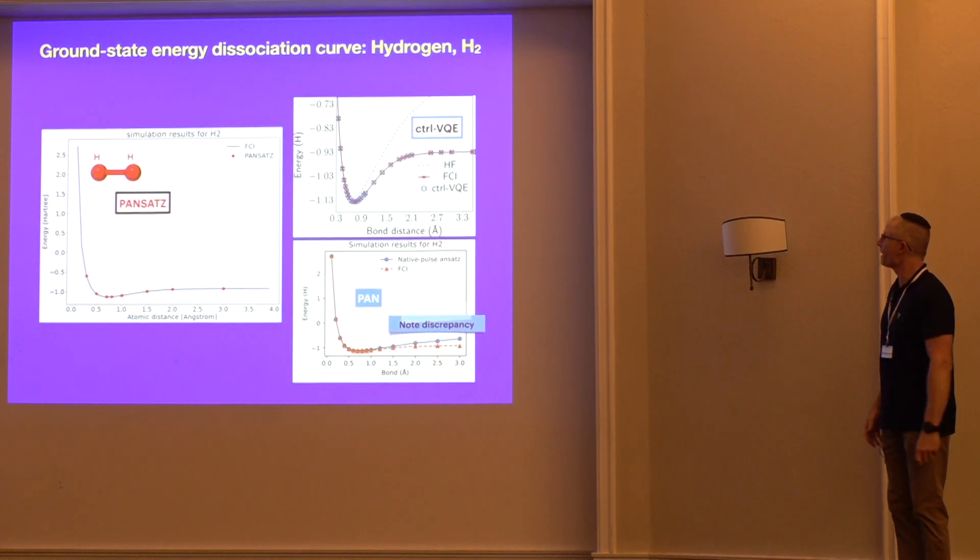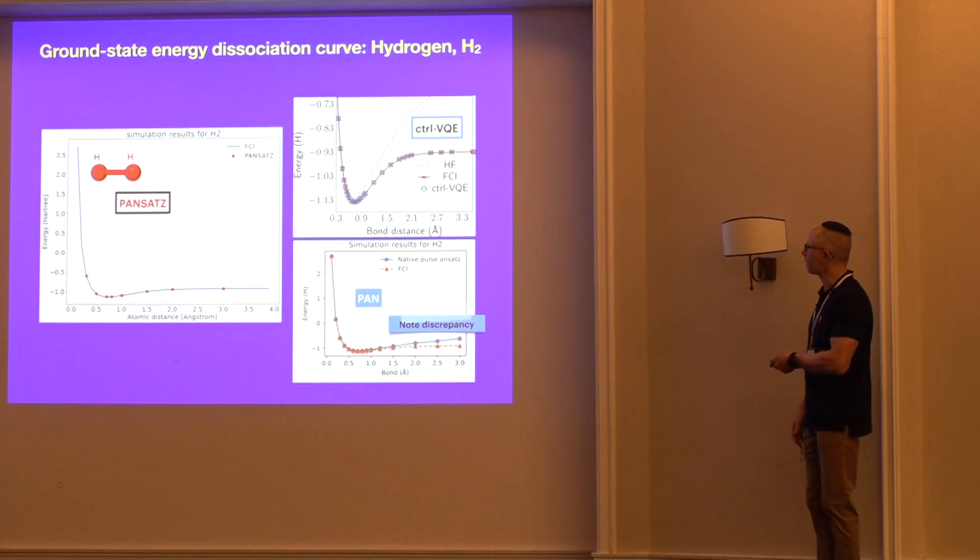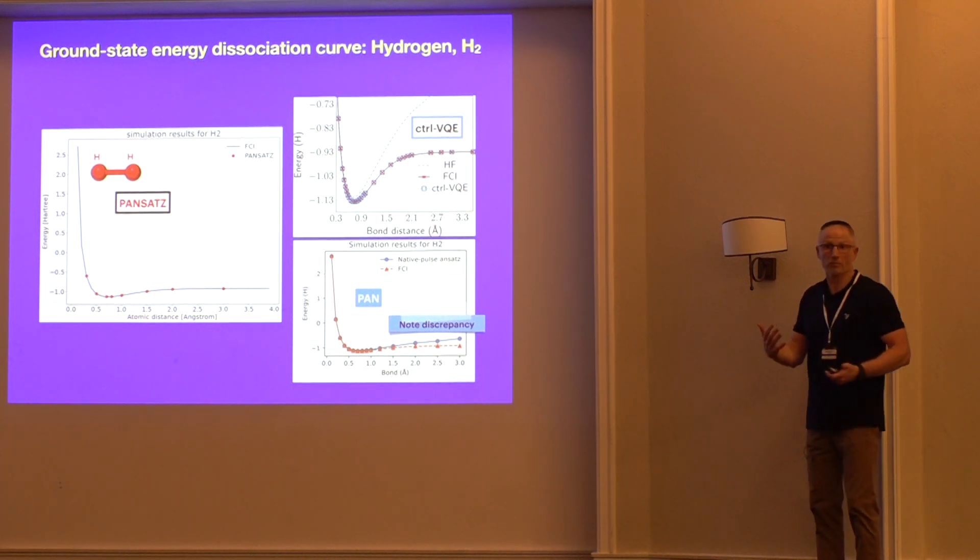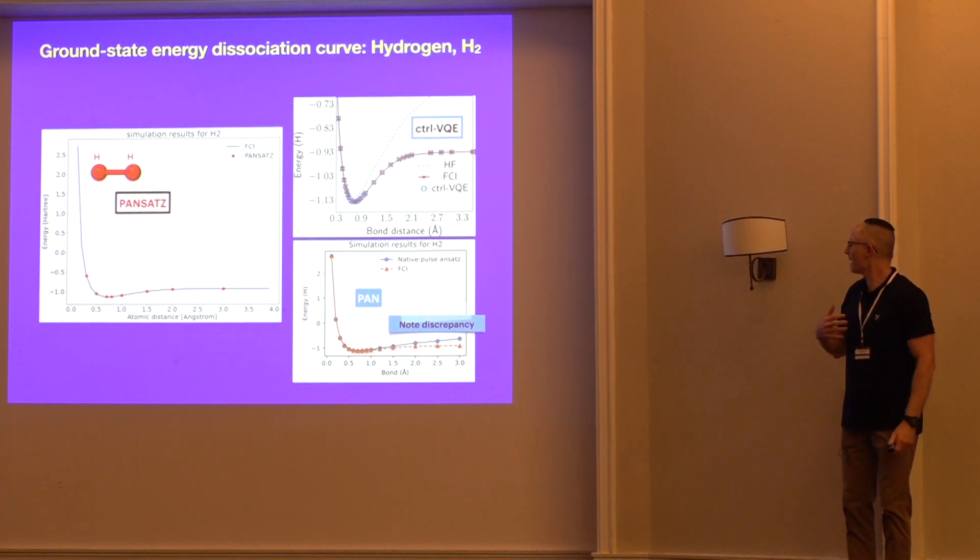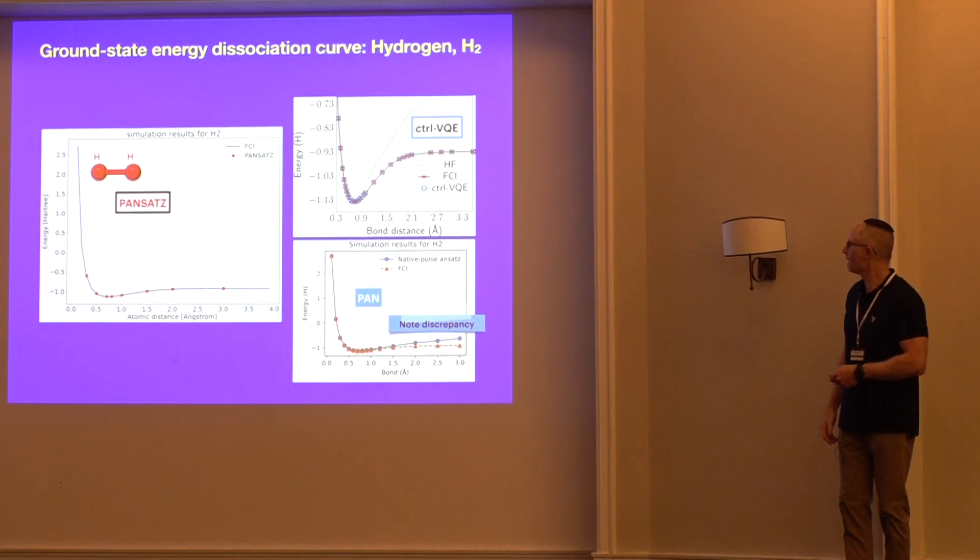How do we do compared to the other approaches that I mentioned? So here's our curve again, sort of zoomed out to match at least one of these two pictures in terms of the aspect ratio. Here's the control VQE, also spot on. The PAN approach, which is a pulse-based approach like ours, they have a discrepancy at larger interatomic distances, and presumably that's because they don't have enough entanglement in their pulses. So keep an eye on that discrepancy. We'll come back to that in just a minute.